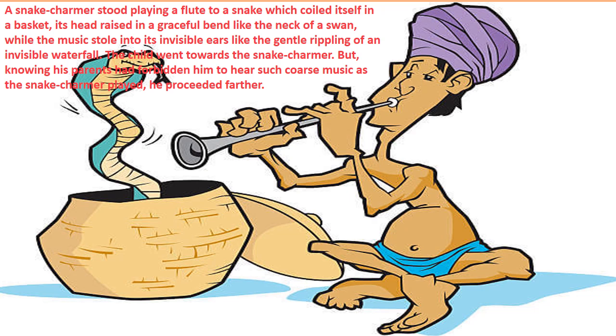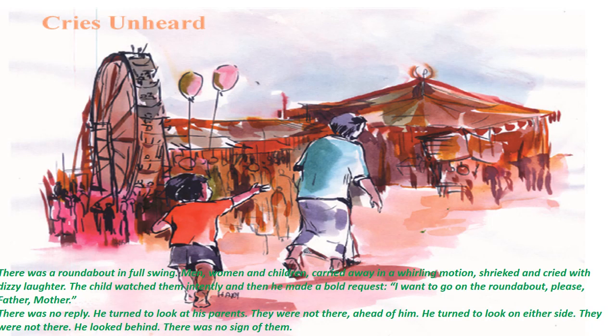Then he saw a snake charmer with a flute, and the snake inside the basket with its head raised gracefully — its neck looking like a swan's neck — swaying to the music. The child's feet pull him toward the snake charmer, but he knows his parents will say 'Don't listen to such coarse music.' So he went away. Then he saw a roundabout with men, women, and children going up and down, shrieking and laughing loudly.